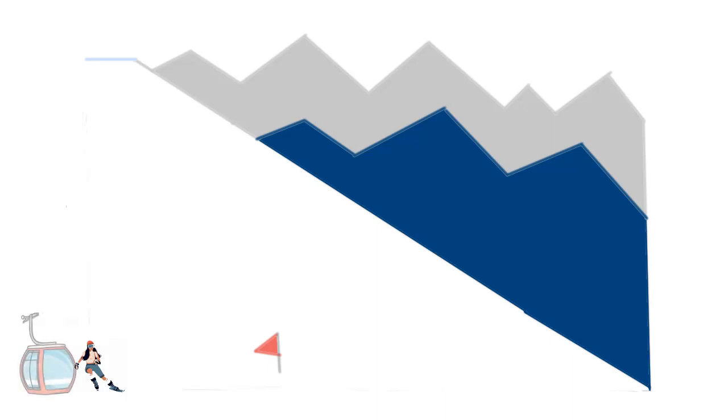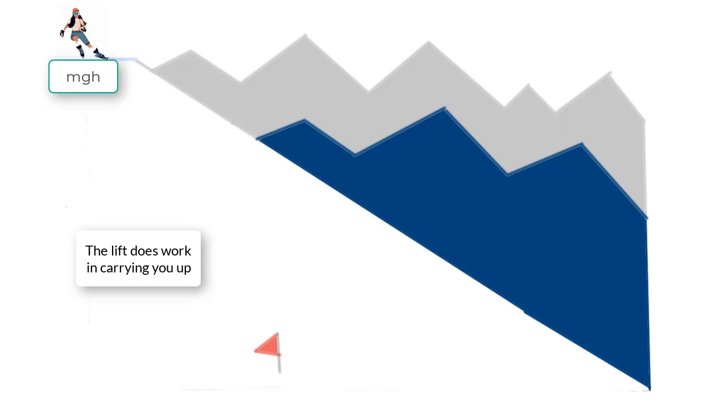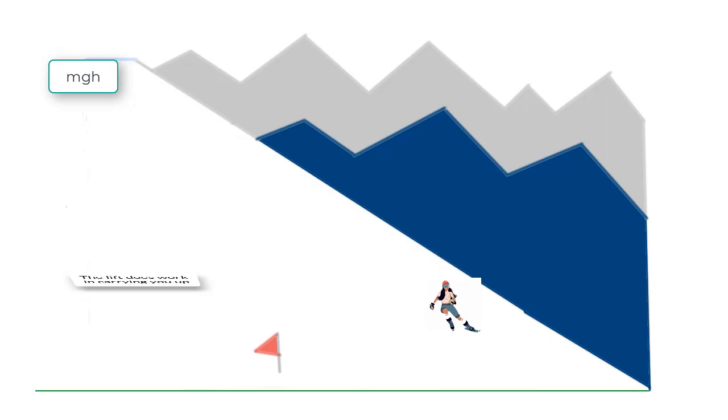This could be a lift that takes you up to the top of the hill against the force of gravity and therefore does work in carrying you up. Then once you are on the top of the hill, you again have the gravitational potential energy to slide down.